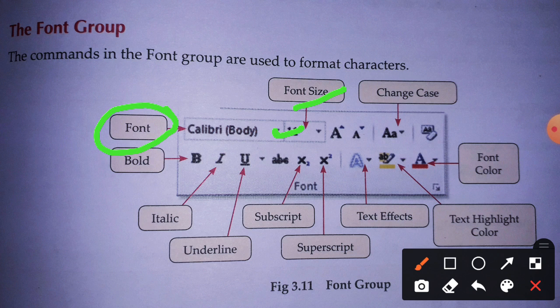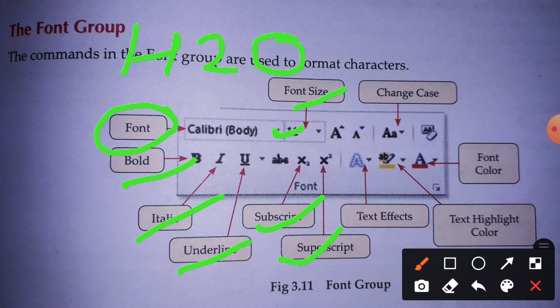It is necessary to select text before applying any option. Next in the Font group we also find Bold, Italic, and Underline, which I explained earlier. Now we have Subscript and Superscript. For example, to write the formula H₂O, you type H2O normally in the computer, but we want the 2 to appear below the H. First select the 2.